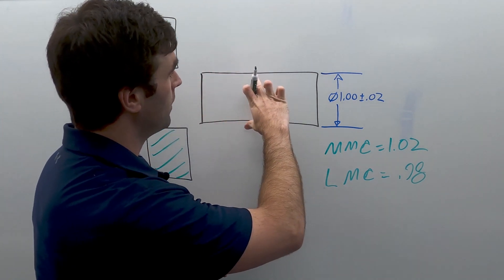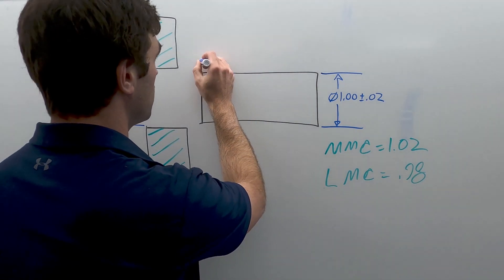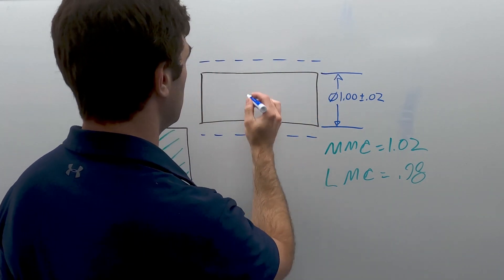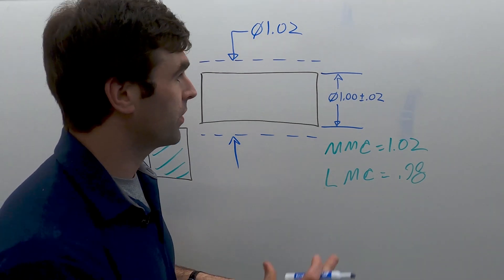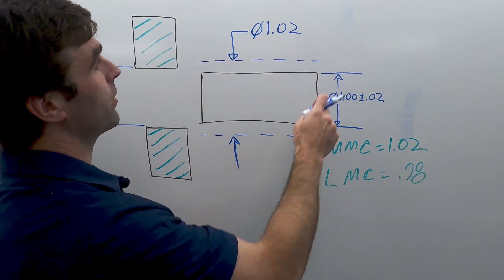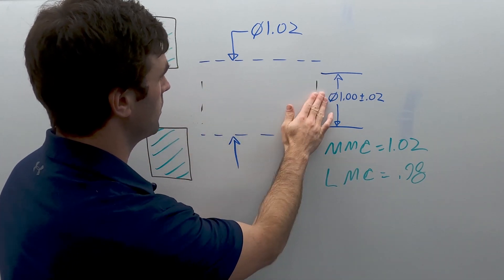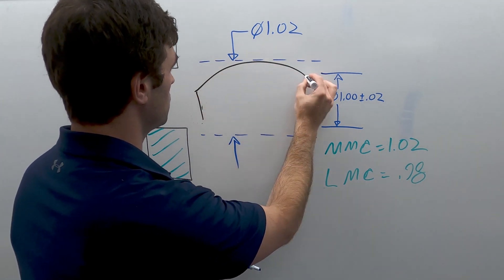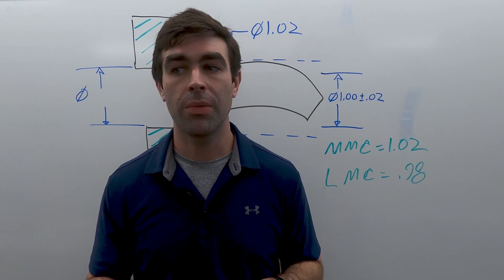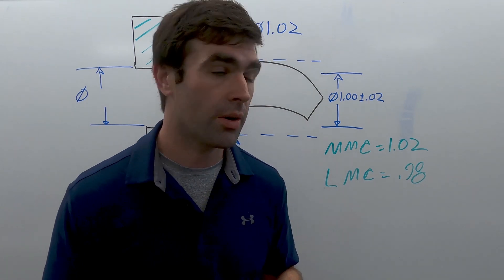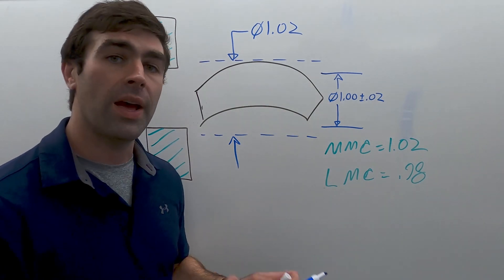There's a boundary of perfect form at the largest diameter. As that part gets smaller, we've got our boundary of perfect form. Say this part is right in the middle. It's at 1.0. This is our boundary of perfect form at 1.02. It's got to hit that. If the part comes in at 0.98, it can be a little banana-shaped. When the part departs from MMC, the form is allowed to vary equal to that departure. So if any diameter on here is 0.98, you can have 20,000 away from the perfect form boundary.